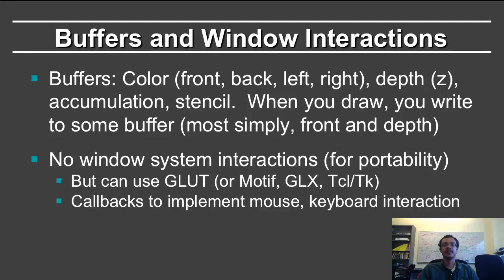First, the color buffer. You can have a front buffer, a back buffer, left and right. Left and right is for stereo, which we don't need to consider much in this course. Front and back is interesting because you only see the front buffer, but there is a technique known as double buffering that draws into the back buffer and then swaps them. There's also a depth buffer to hold the z values, an accumulation buffer to add up contributions from many images, and things like a stencil buffer.